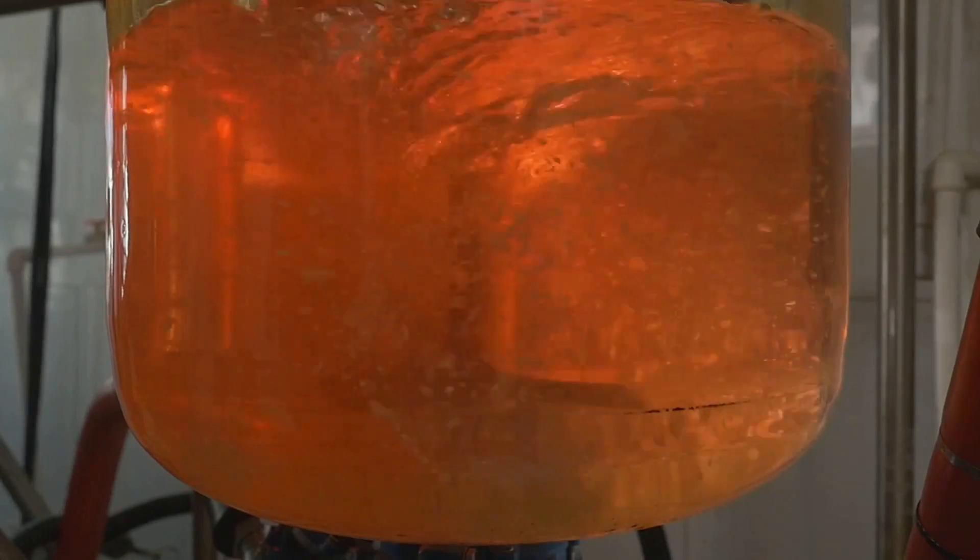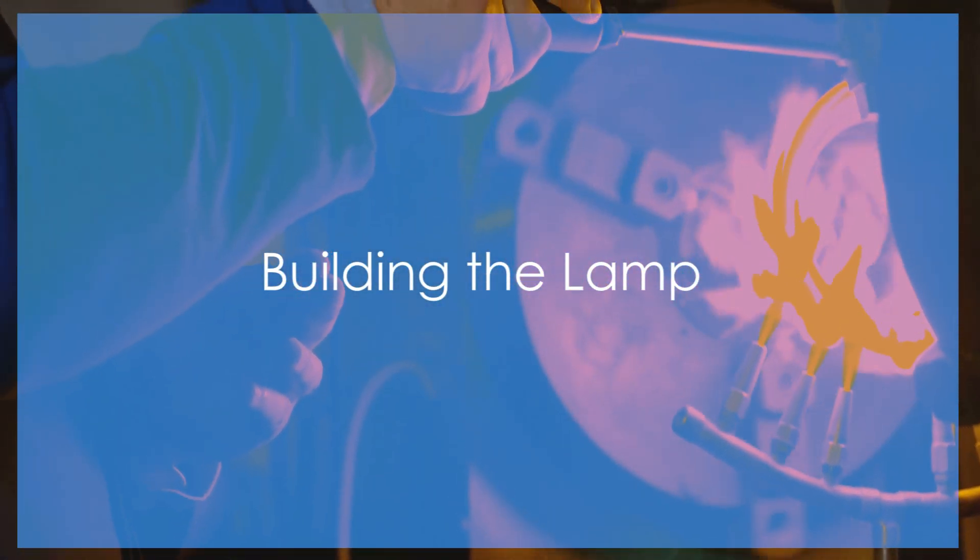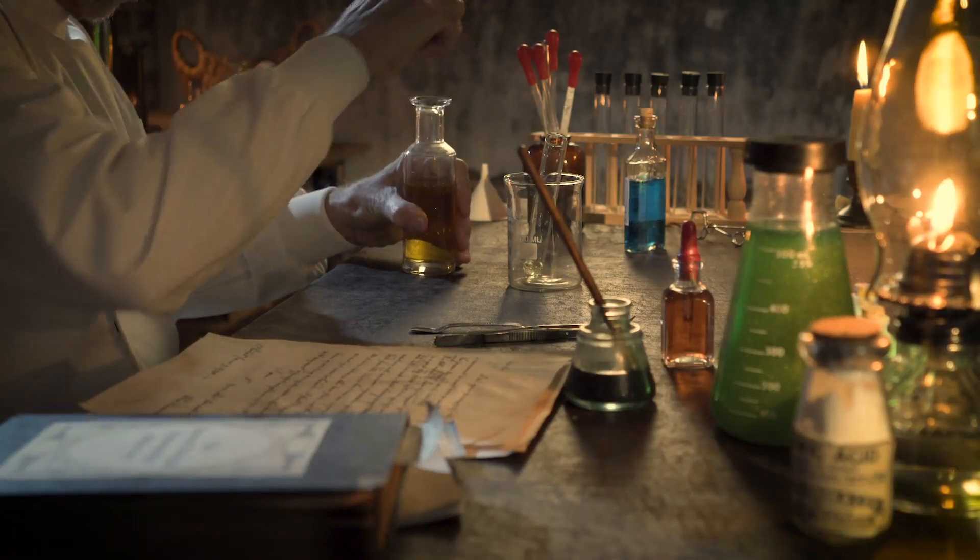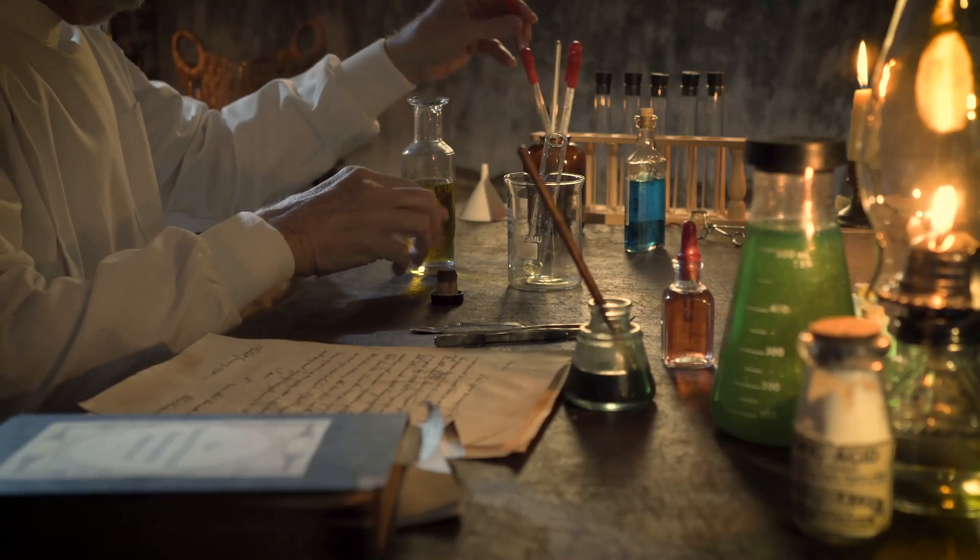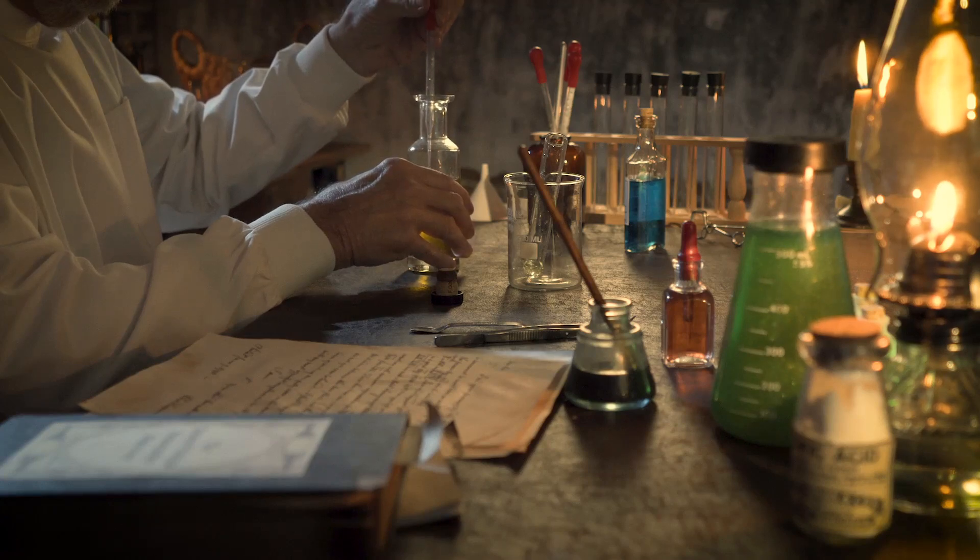Building the lamp: With our lava concoction ready, it's time to assemble the lamp. The process begins with the careful preparation of the glass bottles. Each bottle is meticulously cleaned and inspected to ensure there are no imperfections that could affect the final product.